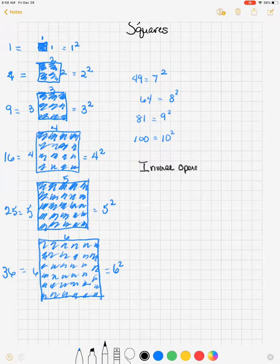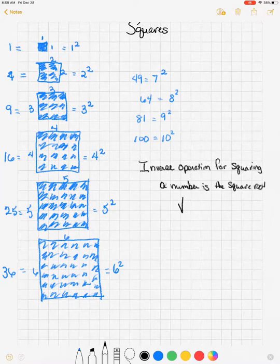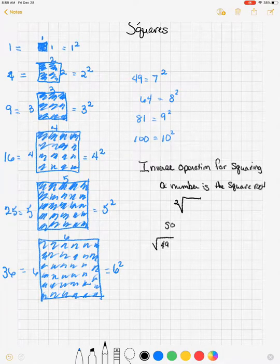But then, what's the inverse of a square? The inverse operation for squaring a number is the square root. So, the square root of 49 is the square root of 7 squared, which is 7.